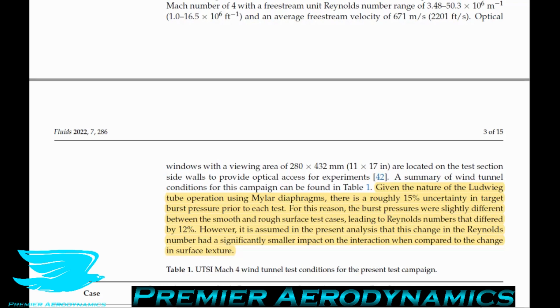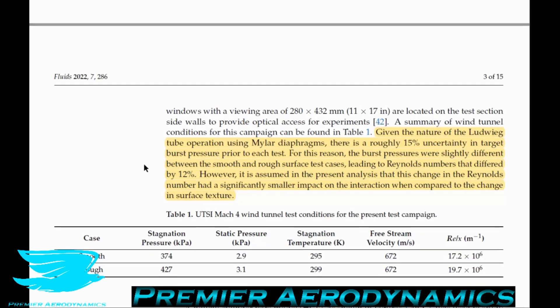Either way, you pierce this membrane. Then, because the pressure inside the tank is so high, the air just runs out. You can use any other fluid, really, but it's usually air. And it has to be compressible, I guess. And it just flows out and creates a sonic flow and supersonic flow. Usually you can get up to like Mach 3, Mach 4 quite easily. They're using Mach 4 here. Given the nature of the Ludwig tunnel, using mylar diaphragms, there is roughly a 15% uncertainty in target burst pressure prior to each test. For this reason, the burst pressures were slightly different between the smooth and rough surface tests, leading to Reynolds numbers that differ by 12%. However, it is assumed that in the present study, this change in Reynolds number had a significantly smaller impact on the interaction when compared to the change in surface texture.